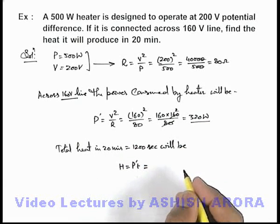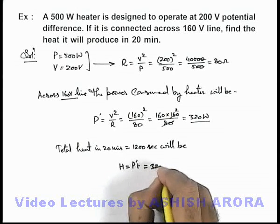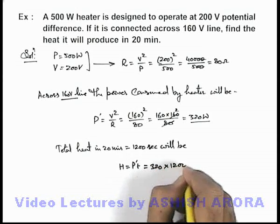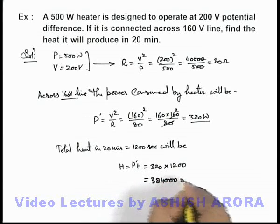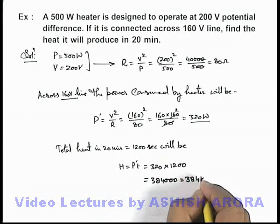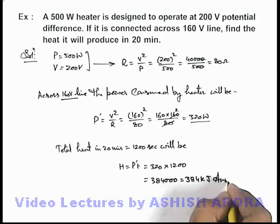This is the total amount of heat produced in 1 second. So this will be 320 multiplied by 1200, that is 384 triple zero. This can be written as 384 kilojoule. That will be the answer to this problem.